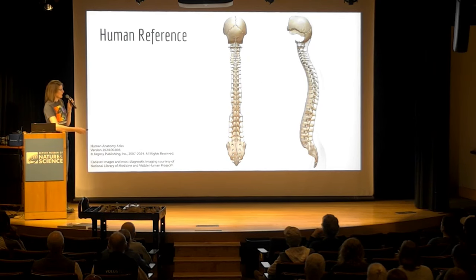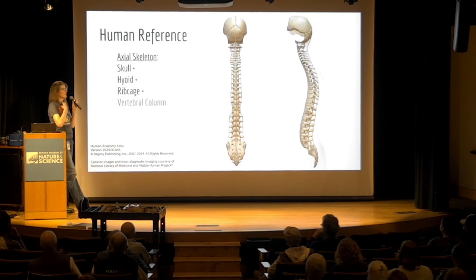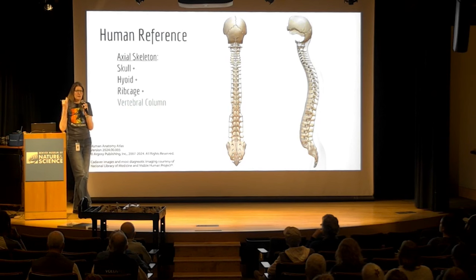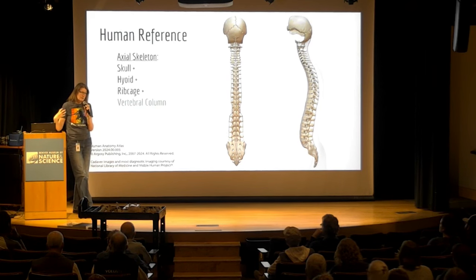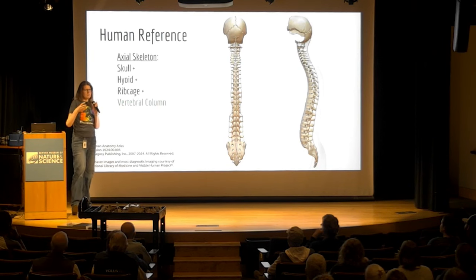What we're talking about here is part of what's called the axial skeleton. The vertebral column combined with the skull, the ribcage, and the hyoid apparatus in your throat are part of the axial skeleton. These are the structures that protect your head, neck, and trunk, as opposed to the appendicular skeleton, which refers to your appendages — arms and legs, plus the clavicle and hip bones. Axial refers to axis, like the central line of something.